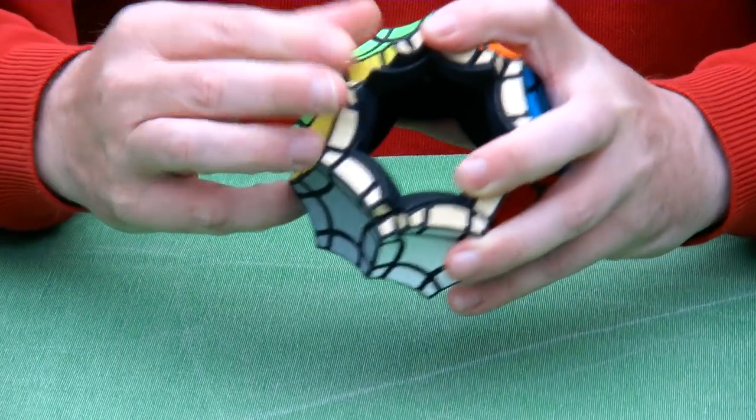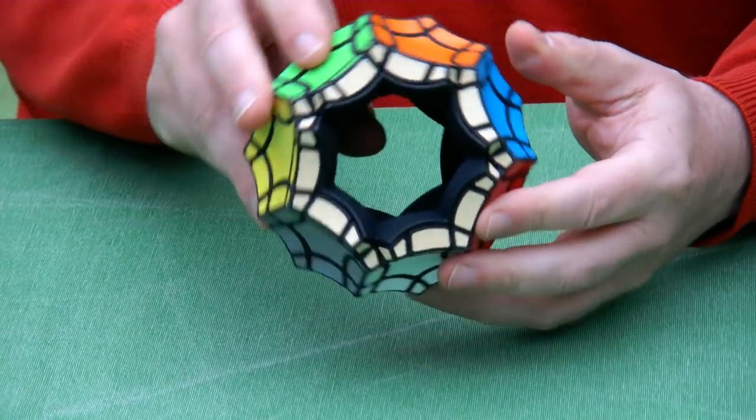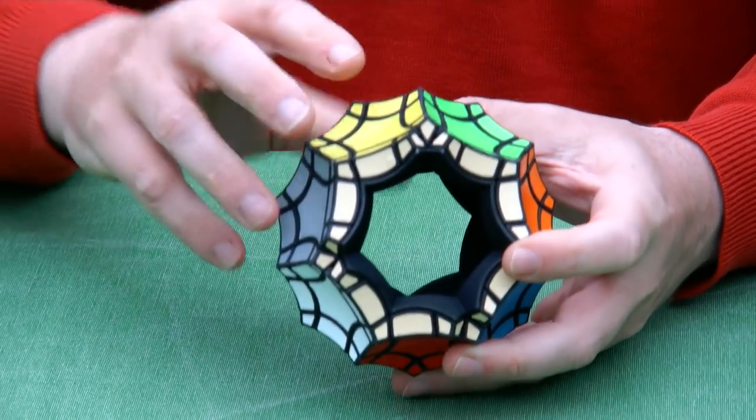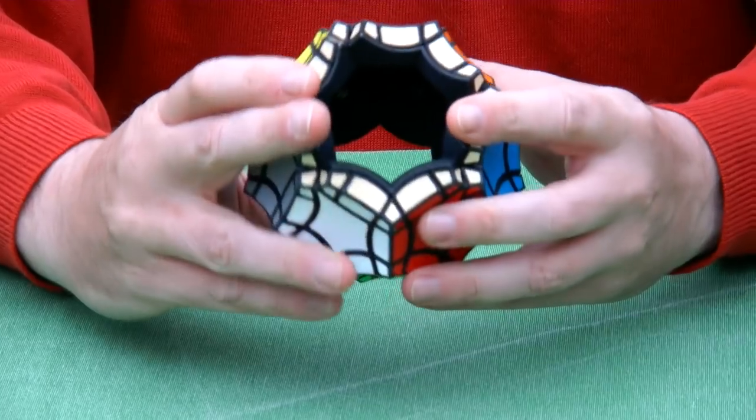And what's special about this puzzle is, of course, that it has a 7-fold symmetry. Because if you rotate it like this, the axis, we have a 7-fold rotation in this direction.